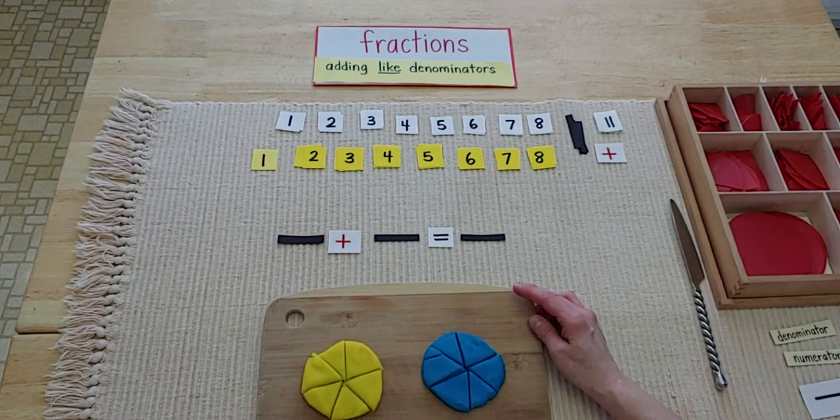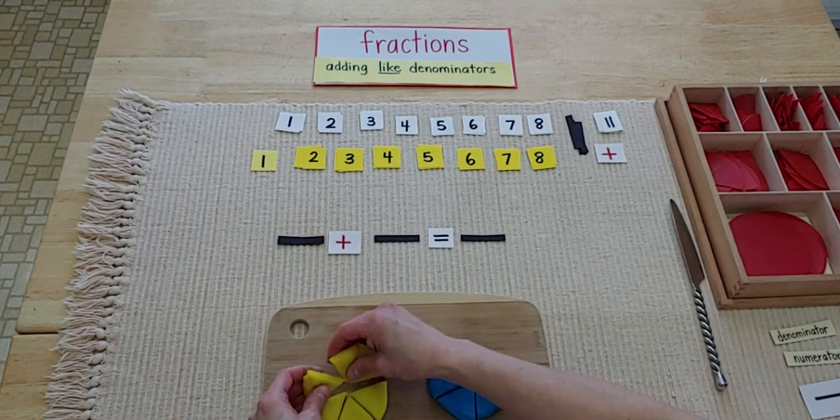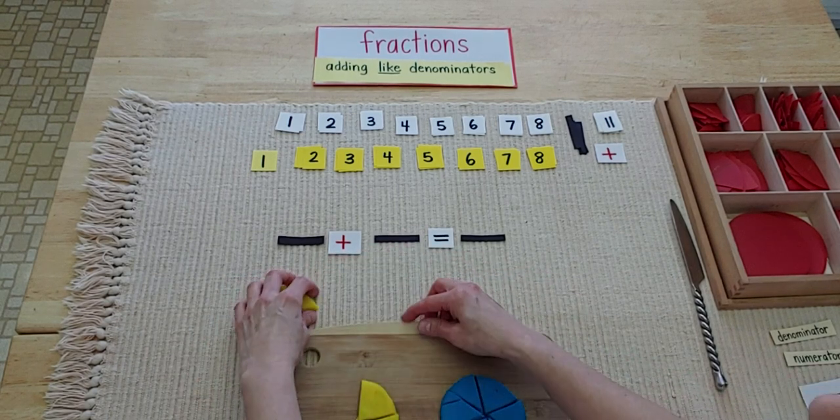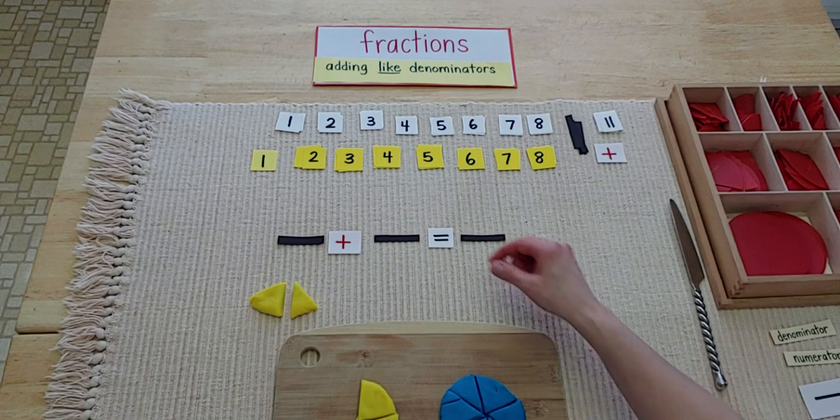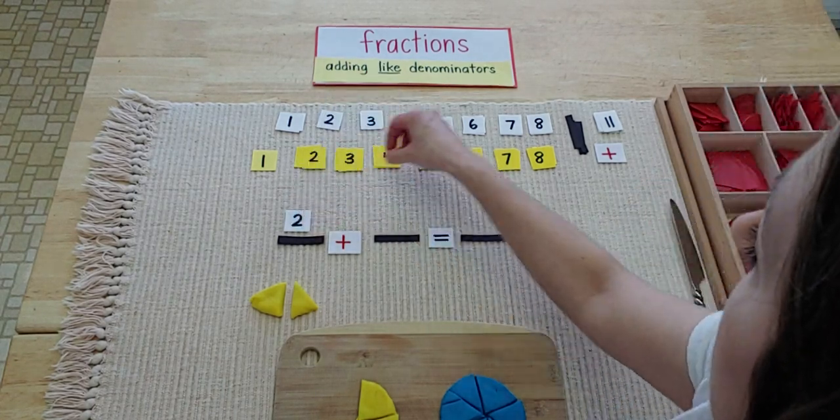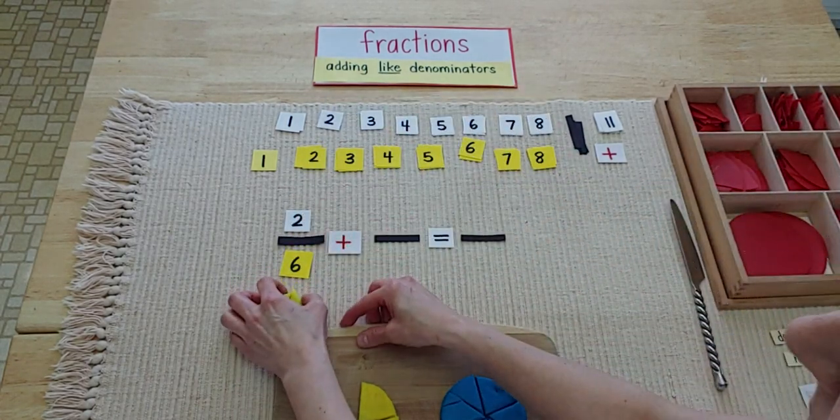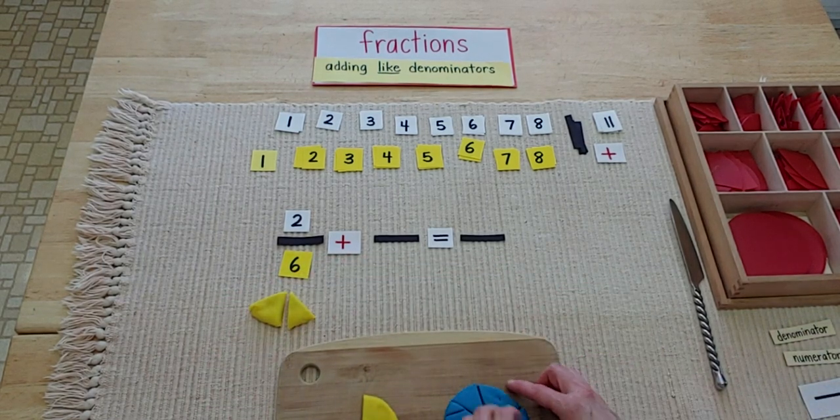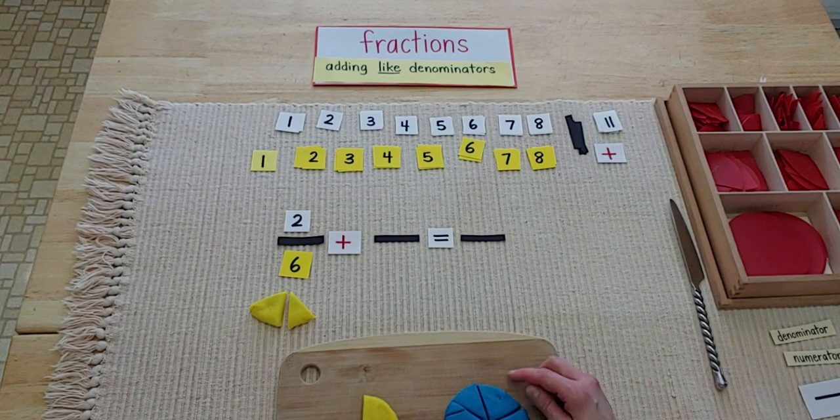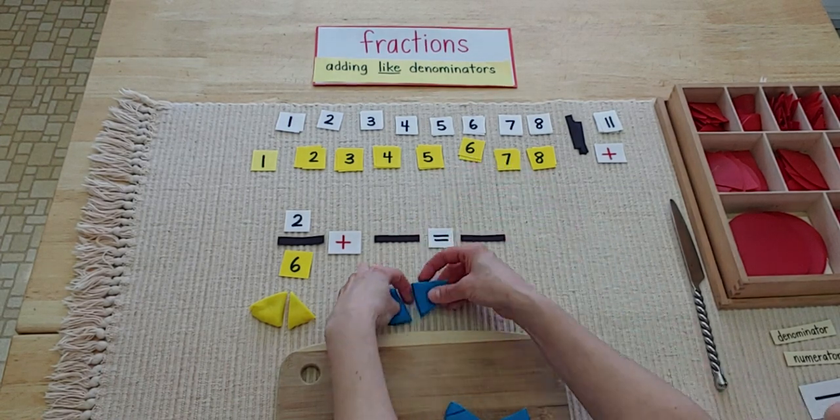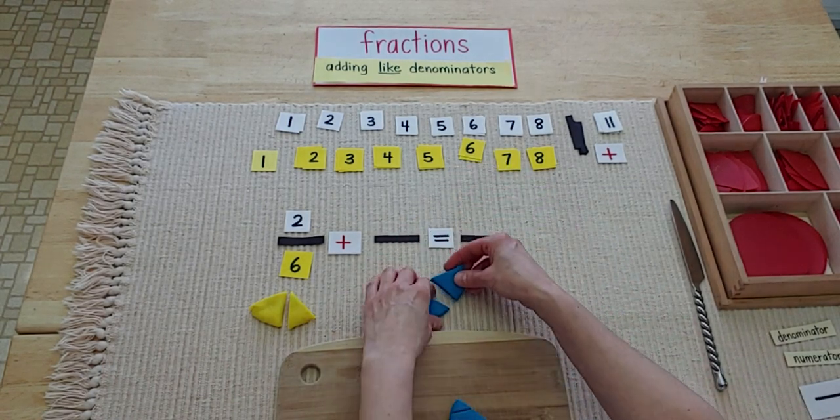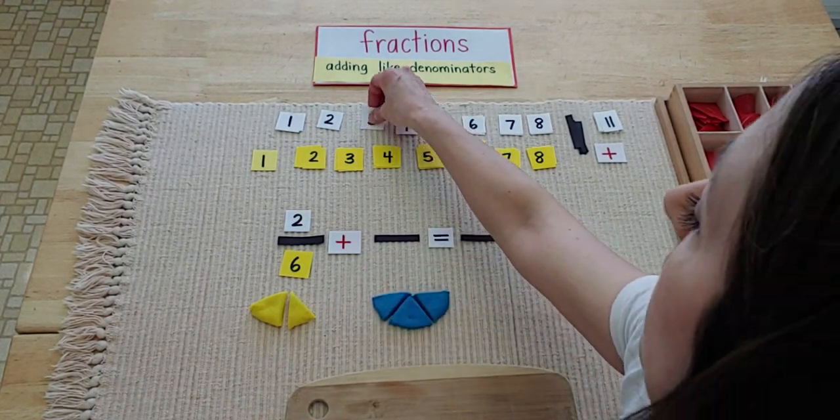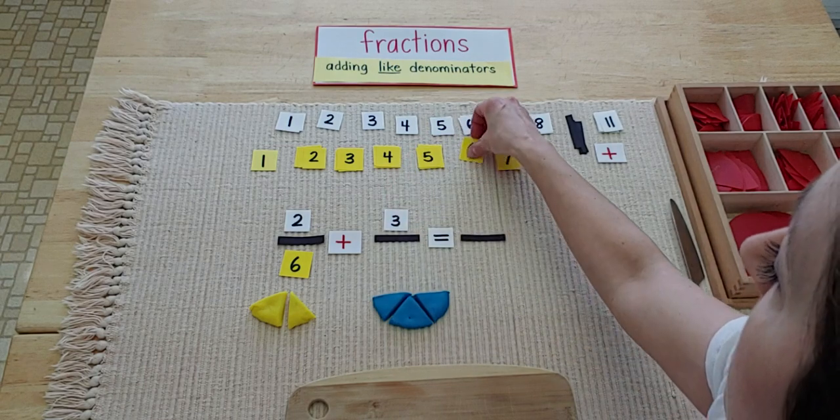And let's pretend my daughter wanted two slices of this lemon pie. She had two six pieces of pie. And then my son came along. Well, he was really hungry. He wants three. He wanted three slices. One, two, three slices of blueberry pie. Because he loves it that much. One, two, three. Three sixths.